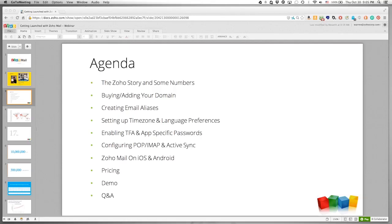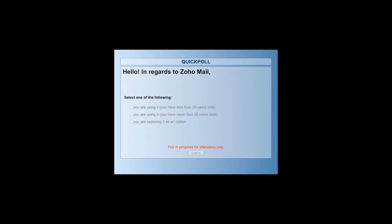One more question for everybody — the last poll. We just want to see how far people have gone with Zoho Mail: whether you have more than 25 users and are currently using it, less than 25 users, or just exploring Zoho Mail as an option. It looks like about 70% of you have less than 25 users, and about 20% are exploring Zoho Mail. Thank you, everybody.